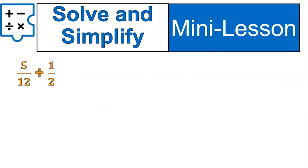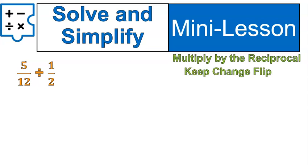Now it's time to solve and simplify. In other words, we are going to multiply by the reciprocal or keep change flip. Try that first step. 5 over 12 divided by 1 half. Go ahead and set that up as a multiplying by the reciprocal question.